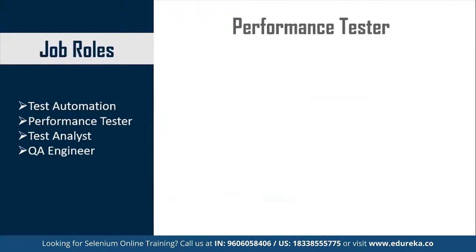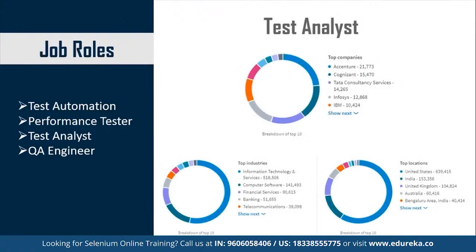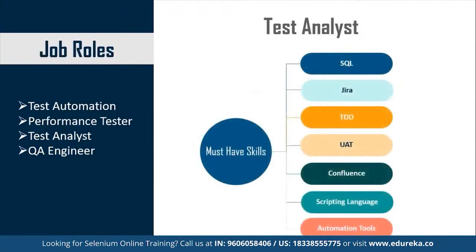Must-have skills to become a performance tester include knowledge of Selenium, Cucumber, Java API, APM, Jira, Python, and automation tools. For the test analyst job profile, Bangalore is one of the top preferred locations after the US, UK, and Australia, with companies like Accenture, Cognizant, and TCS as top recruiters. Skills required include SQL, Jira, UAT, TDD, Confluence, and scripting languages like Python and JavaScript, along with automation tools.